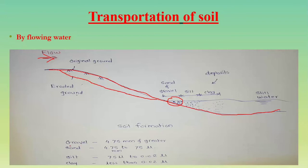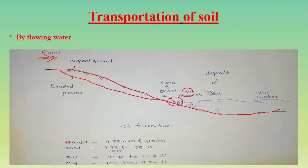Soil particle sizes are as follows: gravel is larger than 4.75 mm; sand is 4.75 mm to 75 microns; silt is 75 microns to 0.02 microns; and clay is less than 0.02 microns. Since silt particles are somewhat larger than clay particles, silt is deposited closer to the source, while clay particles are deposited further away.